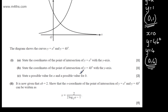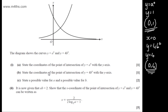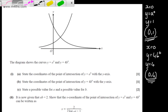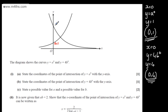We now need to state a possible value for a and a possible value for b. If we consider y equals a to the x, we can see from these coordinates — so if I just pop these on, what we've got: this is going to be (0, 1) and this is going to be (0, 4). So we have y equals a to the x and y equals 4 lots of b to the x.